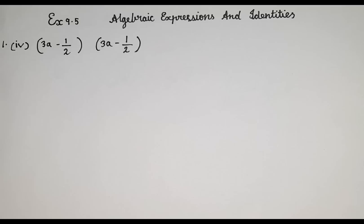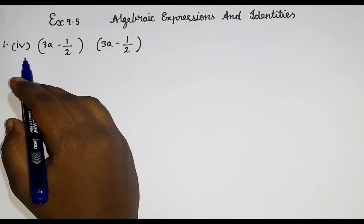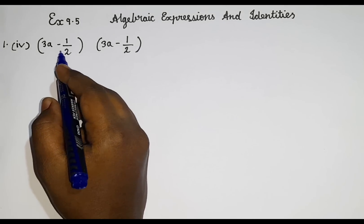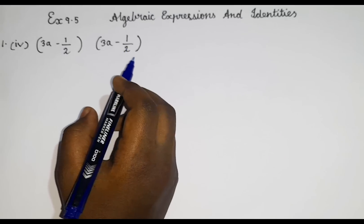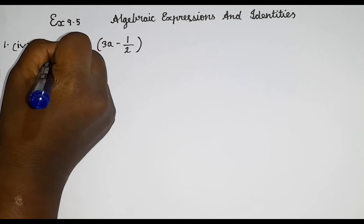So guys, let's read the question. Using the following identity, we should find the product of each of the following. So the fourth subdivision is 3a minus 1 by 2 into 3a minus 1 by 2. As you guys know, we will name it.